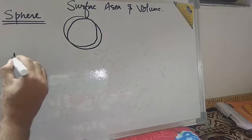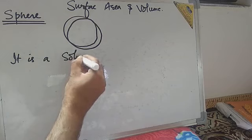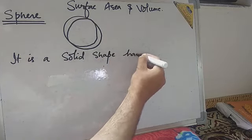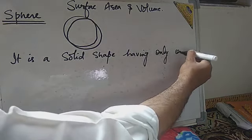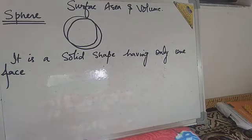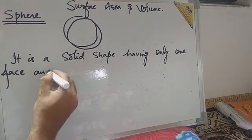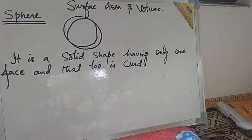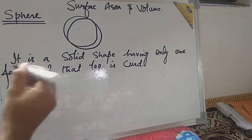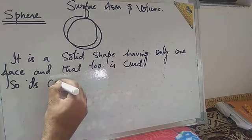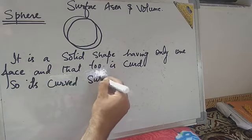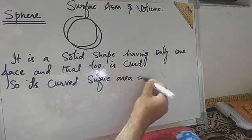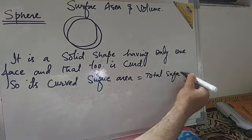What is the definition of a sphere? It is a solid shape having only one face, and that too is curved. Its curved surface area is equal to its total surface area.